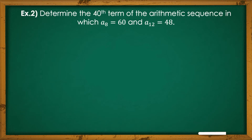Now let's proceed to Example 2. Determine the 40th Term of an Arithmetic Sequence in which A sub 8 equals 60 and A sub 12 is 48. In this example, what we are looking for is A sub 40, but we are only given two terms of the Arithmetic Sequence — the 8th term and the 12th term. So, let's find the first term and the common difference, since they are needed to complete the problem using the general rule.